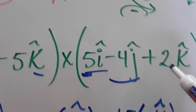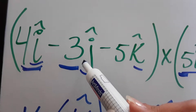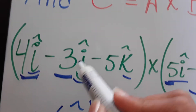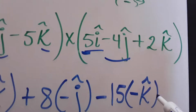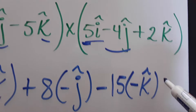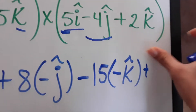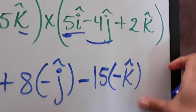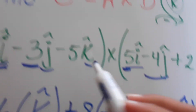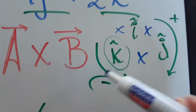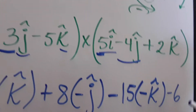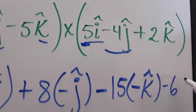We're going to have negative 3 times negative 4 — j cross j, that's 0. So we go to the next one: negative 3 times 2. That's negative 6. And it's j cross k. We go over here — j cross k, we're going this way, so it's going to be a positive i.